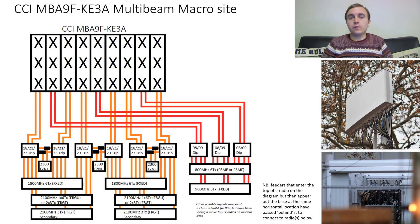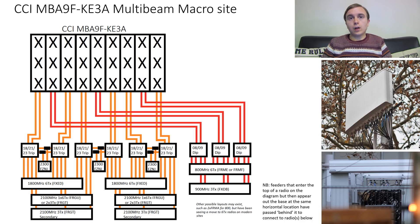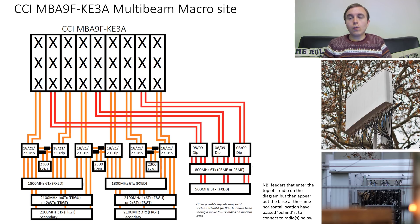Starting with the low band side, we have our three beams of U09 and L08. A typical macro site has three sectors, so this is not all that different to a conventional macro site. Additionally, because Nokia's radio portfolio includes radios with high numbers of transmit capabilities, there aren't actually that many radios involved. For 800 MHz we can have an FRME or an FRMF, which is 6TX 6RX — so one radio will do the three beams or three sectors of the site.